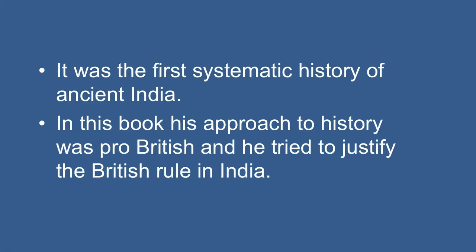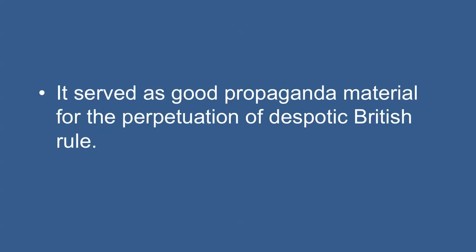In 1904, V.A. Smith wrote Early History of India, the first systematic history of ancient India. In this book, his approach to history was pro-British and he tried to justify British rule in India, serving as propaganda material for the perpetuation of despotic British rule. This brings me to the end of my discussion on the sources of ancient Indian history. Thank you.